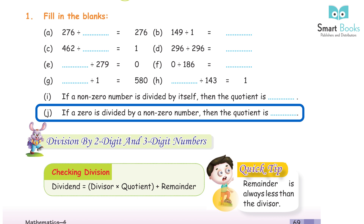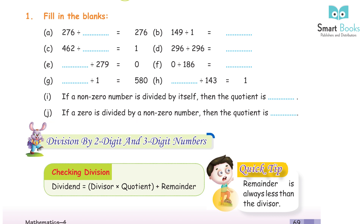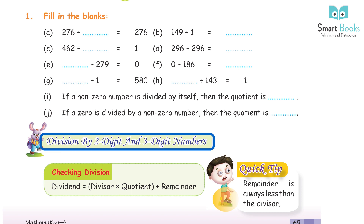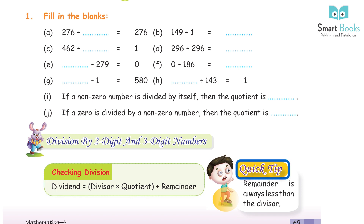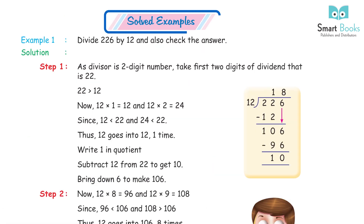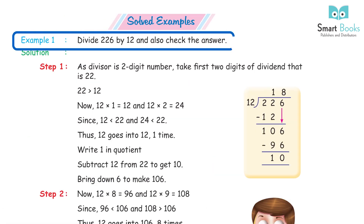Division by two-digit and three-digit numbers. Checking division: dividend equals divisor multiplied by quotient plus remainder. Quick tip: the remainder is always less than the divisor.